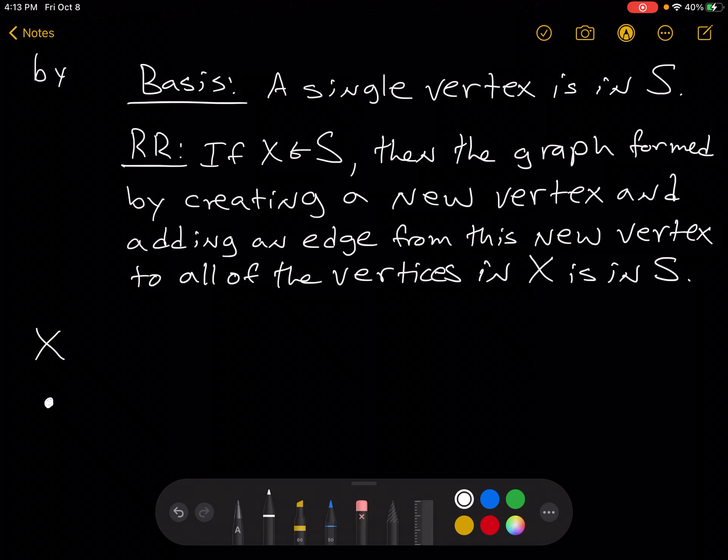Now we'll think of this graph as the graph X. X is the name for this graph consisting of a single vertex. And the recursive rule says that if X is in S, then the graph formed by creating a new vertex and adding an edge from this new vertex to all of the vertices in X is also in S.